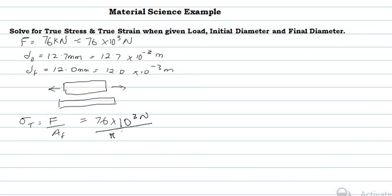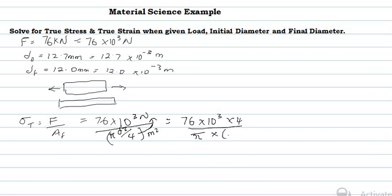So our expression becomes: 76 × 10³ Newtons times 4, divided by π, times d² — where d is the final diameter, 12 × 10⁻³ meters squared. The 4 comes up to the numerator when you rearrange the formula, giving units of Newtons per meters squared.